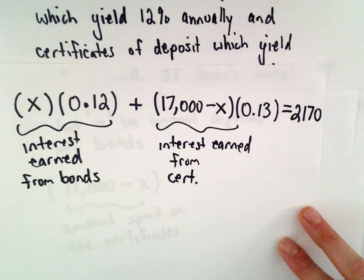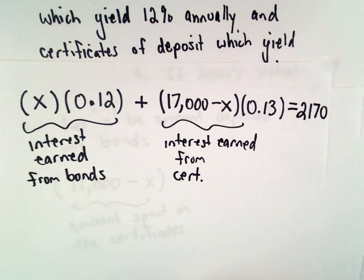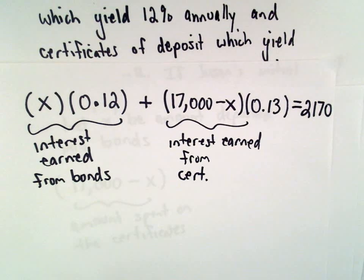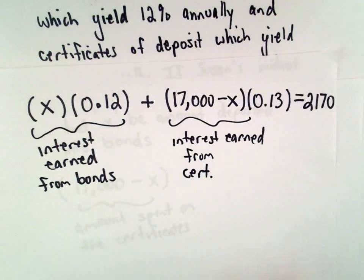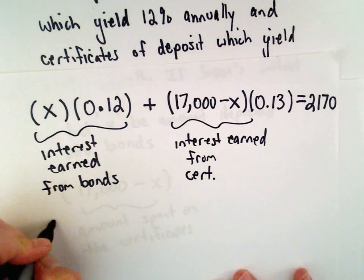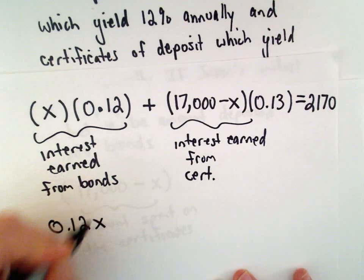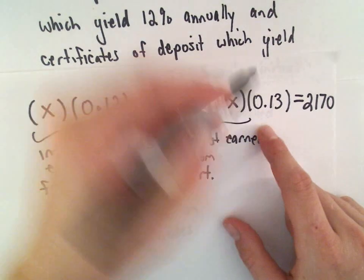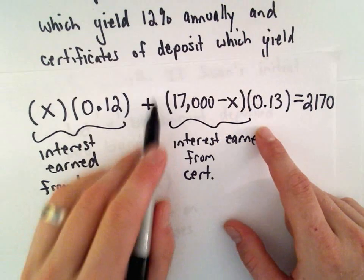Now we've got our linear equation that we have to solve. What I'm going to do is start multiplying things out, combining like terms. X times 0.12 will just be 0.12 times X, plus the 0.13. You can imagine that's sitting out front. We would have to distribute that to both terms.